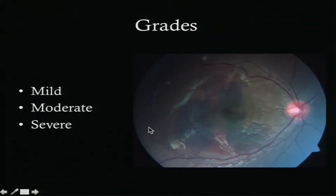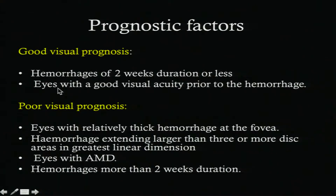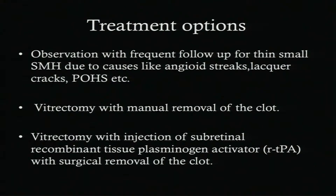We have different grades: mild is less than half disc diameter, moderate is up to 2 DD, and more than 2 DD is severe. If it extends from 2 DD up to the equator, we go for surgery. Good visual prognostic indicators include shorter duration and eyes with good initial vision, while larger hemorrhage with longer duration and AMD carry a poor prognosis.